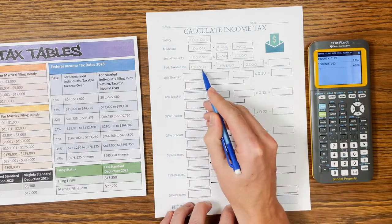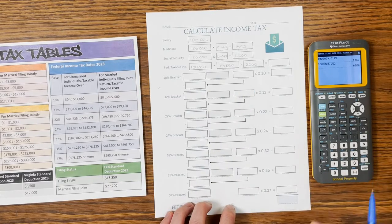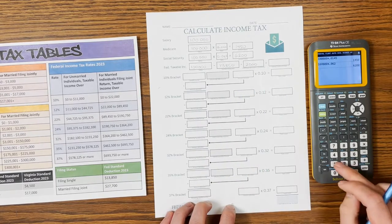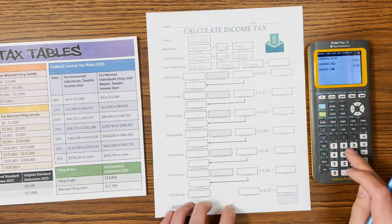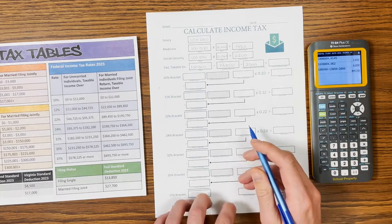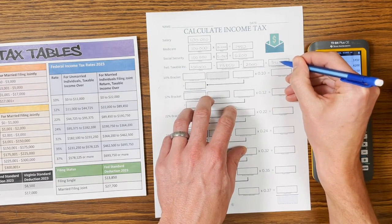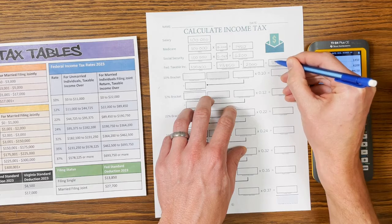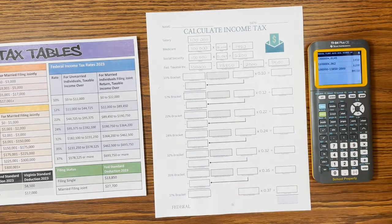So your taxable income is going to be salary minus standard deduction minus traditional contributions if you have any. If you have nothing, just put zero. So $100,000 minus $13,850 minus $2,000, I have $84,150 of taxable income.